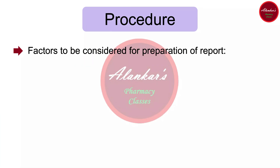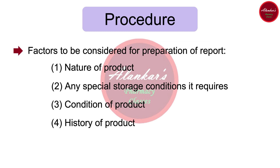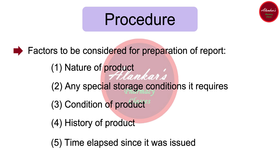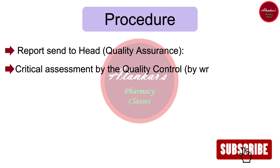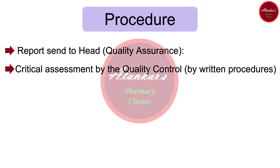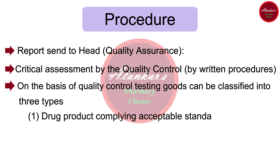The factors to be considered for the preparation of the report are: first, the nature of the product; second, any special storage conditions it requires; third, the condition of the product; fourth, the history of the product; and fifth, the time elapsed since it was issued. After that, the report is sent to the Head of Quality Assurance, and there is a critical assessment of returned goods by quality control through specific written procedures or standard operating procedures.